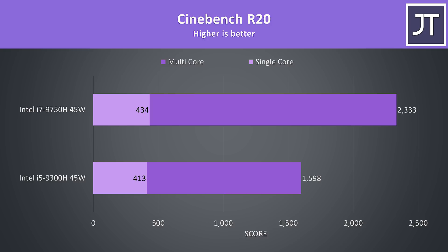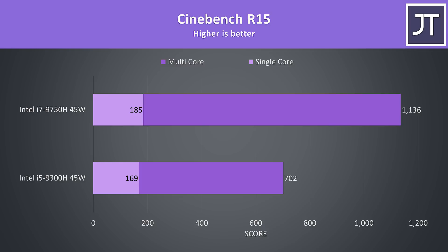The i7 is only 5% ahead in terms of single core performance, if you recall the i7 can boost 400MHz higher in single core workloads. I've also tested the older Cinebench R15 as many people still use it. This time the i7 was a larger 9.5% ahead in single core performance, and a much larger 62% faster at multi core. This test doesn't take too long to complete, so that larger difference could be due to PL2 limits.